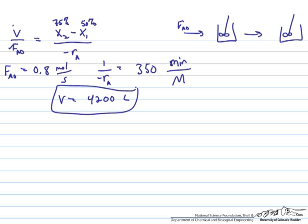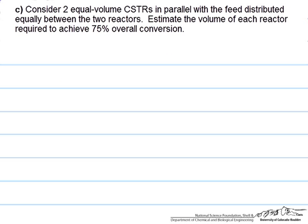Even though we're only achieving 25% more conversion, where in the first reactor we've got 50%, this reactor is almost as big as the original 4,900 liter reactor. Now let's move on to part C.